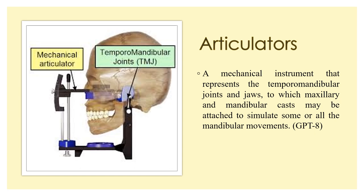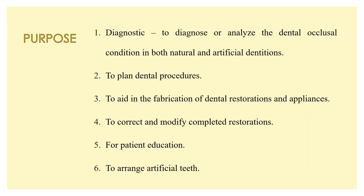Looking at articulators: your articulator is a mechanical instrument that represents the temporomandibular joint and the jaws, to which the maxillary and mandibular casts may be attached to simulate some or all of the mandibular movements. It depends on the kind of articulator you are using — if you use a simple articulator you can only simulate open and close mechanisms, but if you use a complex articulator like a virtual articulator or a semi-adjustable articulator, you are transferring all the different kinds of movements.